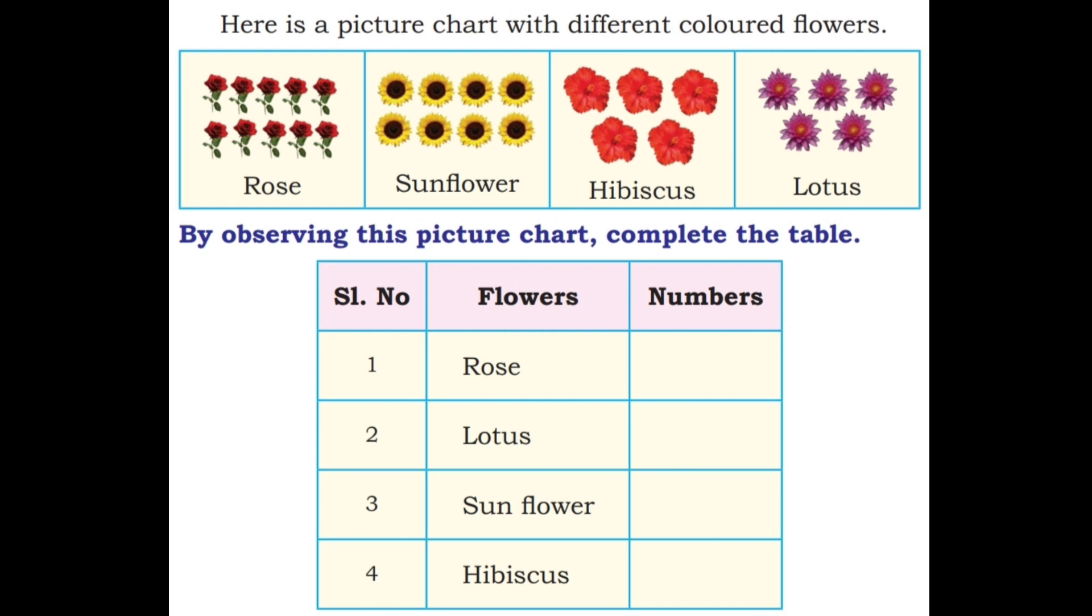Here is a picture chart with different colored flowers. Rose, sunflower, hibiscus, lotus. By observing this picture chart, complete the table.